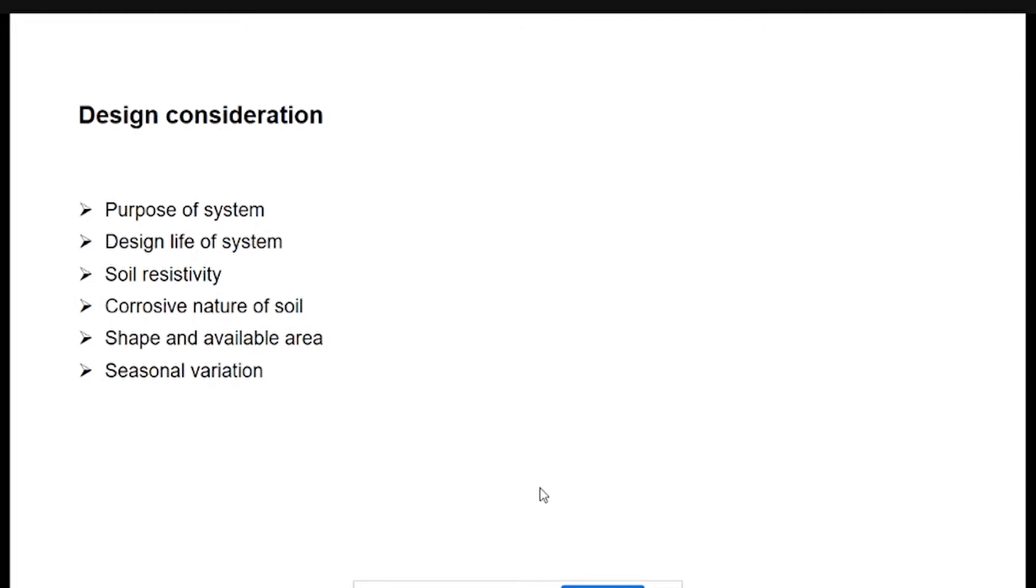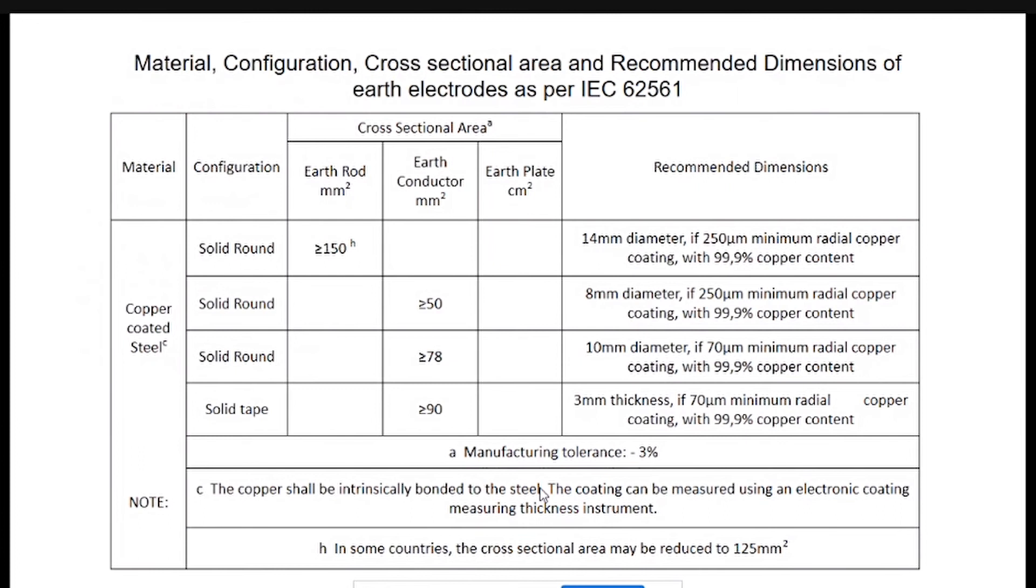The corrosive nature of the soil is important because it determines the material you need to provide for earthing. Very importantly, shape and available area matter because many times we design only with AutoCAD drawings without a clear picture of what's at the site. A practical study of site is important because with AutoCAD you can design 100 earthing systems, but practically there may not be sufficient space to implement them.